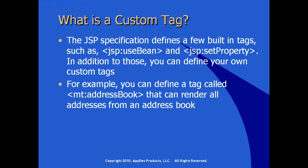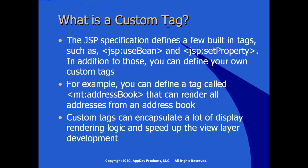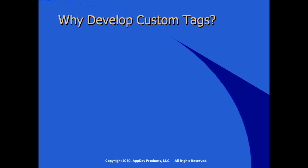For example, in your application for your JSP developers, you could define a tag called AddressBook and specify it so that your JSP developers can render all the addresses from an address book with the use of a simple tag in a syntax that they expect to use. Custom tags can encapsulate a lot of display rendering logic and speed up the view layer development, because the view layer developers are generally writing JSPs and focusing their skills on easy-to-use JSP syntax.